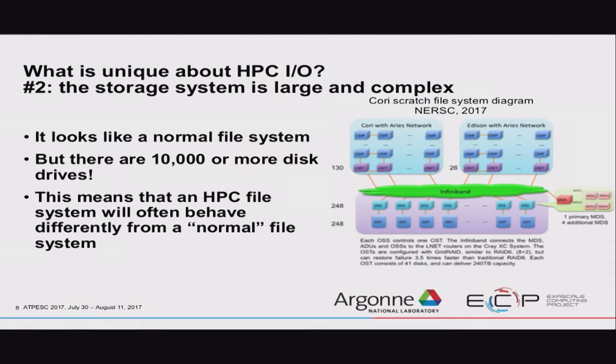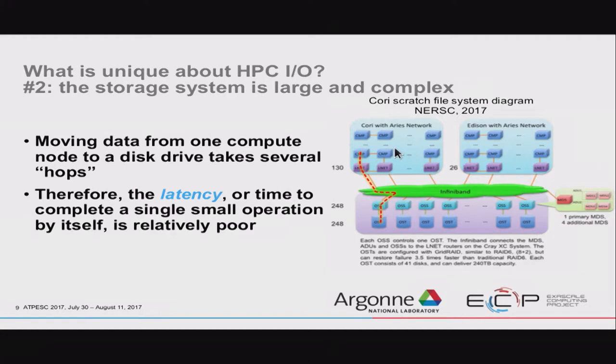The second thing: because these file systems are so big — tens of petabytes at minimum — they look like a normal file system, but there's probably at least 10,000 hard drives back there, and this means it's going to act differently than a conventional file system. The diagram here shows one of the larger file systems on the Cori system at NERSC. Compute nodes connect through LNET router nodes to a big InfiniBand complex, then to storage servers, then to appliances, down to individual disk drives. So when you write a byte of data from a compute node to disk, it's bouncing through a lot of places — the latency is actually pretty bad.